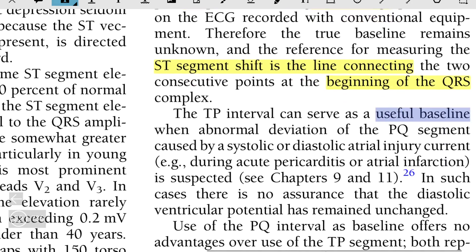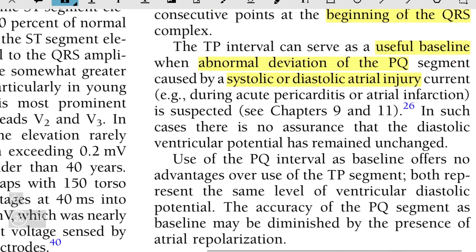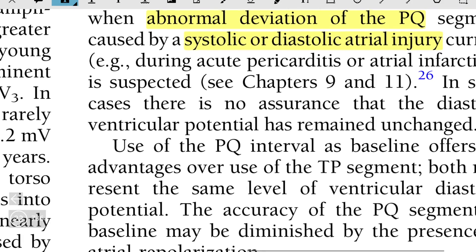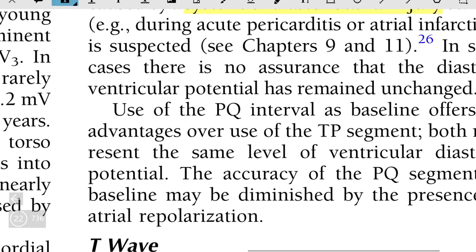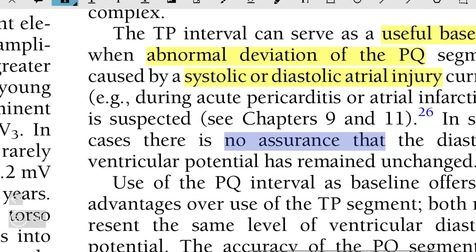The TP interval can serve as a useful baseline when abnormal deviation of the PQ segment, caused by a systolic or diastolic injury current such as in acute pericarditis, can be seen. In such cases, there is no assurance that the diastolic ventricular potential has remained unchanged.